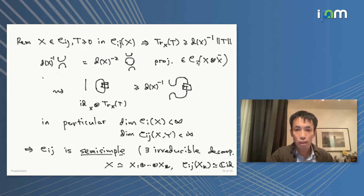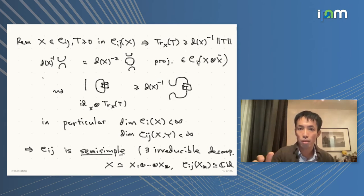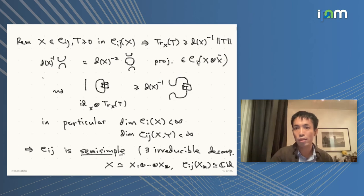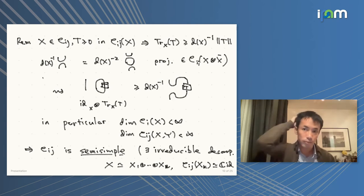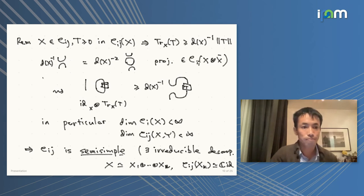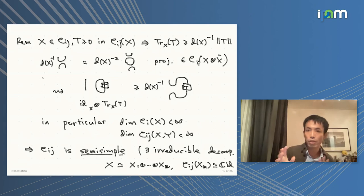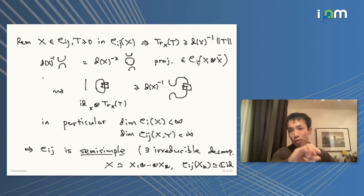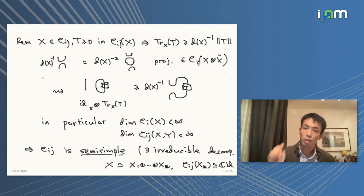The consequence of this trace estimate — bounded below by norm times d(X) inverse — is that endomorphism rings must be finite-dimensional. So we always get semisimplicity from this setting, since finite-dimensional C*-algebras decompose via minimal projections, and minimal projections give irreducible objects.